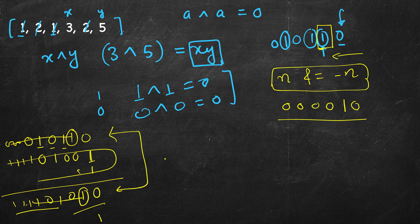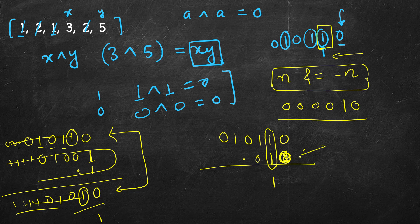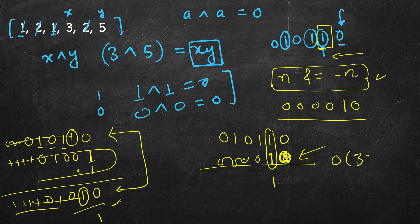If you don't know that shortcut, you can also find the last set bit manually: take the number and AND it with 1; if the result is non-zero the last bit is set, otherwise left-shift 1 and repeat. Both approaches give the same result — a number with only one bit set — but n AND minus-n is O(1) while the manual approach takes O(32) for a 32-bit integer.